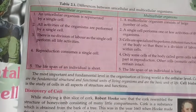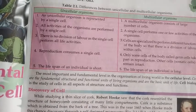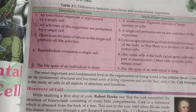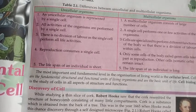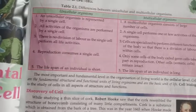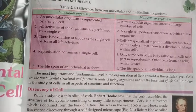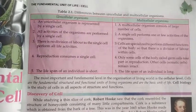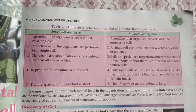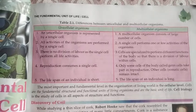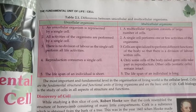In multicellular organisms, specialized cells perform different functions, so we can see division of labor within the cells. Reproduction in unicellular organisms takes place by a single cell, while in multicellular organisms only some cells called germ cells take part in reproduction. Other cells — the somatic cells — remain intact.